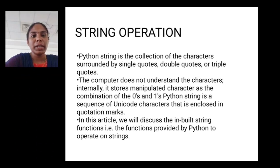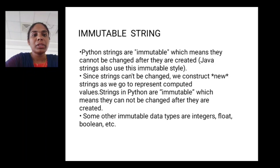String operations. Python string is a collection of characters surrounded by single quotation, double quotation or triple quotation. The computer does not understand the characters. Internally, it stores and manipulates characters as the combination of zeros and ones. Python string is a sequence of unicode characters that is enclosed in quotation marks. We will discuss built-in string functions that are provided in Python to operate on strings. Immutable strings. Python strings are immutable which means they cannot be changed after they are created. Since strings cannot be changed, we construct new strings as we go to represent computed values.